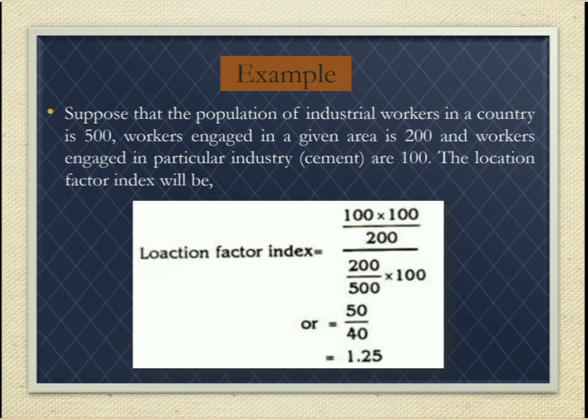Suppose the total population of industrial workers in a country is 500, workers engaged in a given area is 200, and workers engaged in a particular industry in that area are 100. The location factor index will be: (100/200) × 100, divided by (200/500) × 100, which equals 50 divided by 40, that is equal to 1.25. Since the index is greater than 1, the industry appears to be centralized in that area.